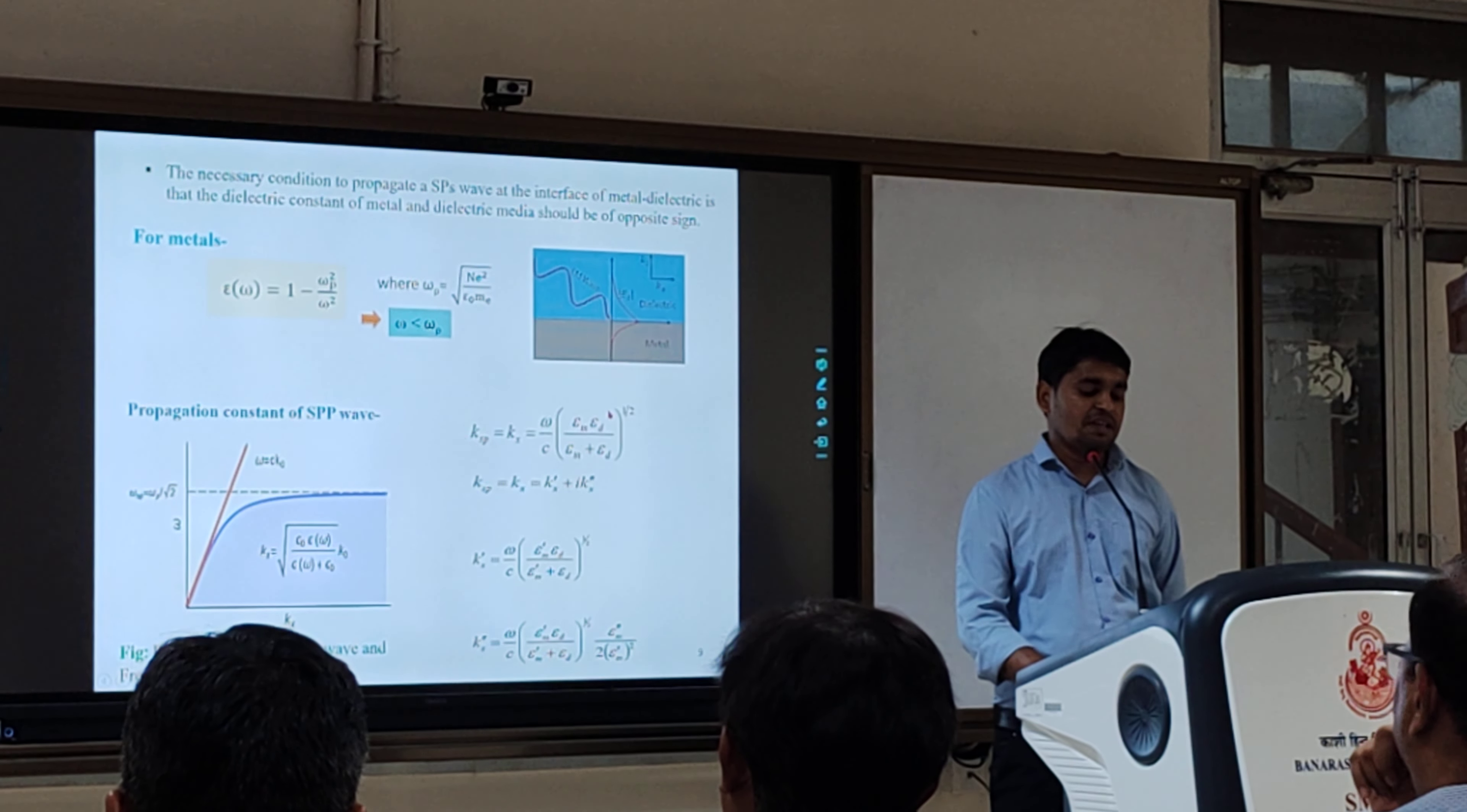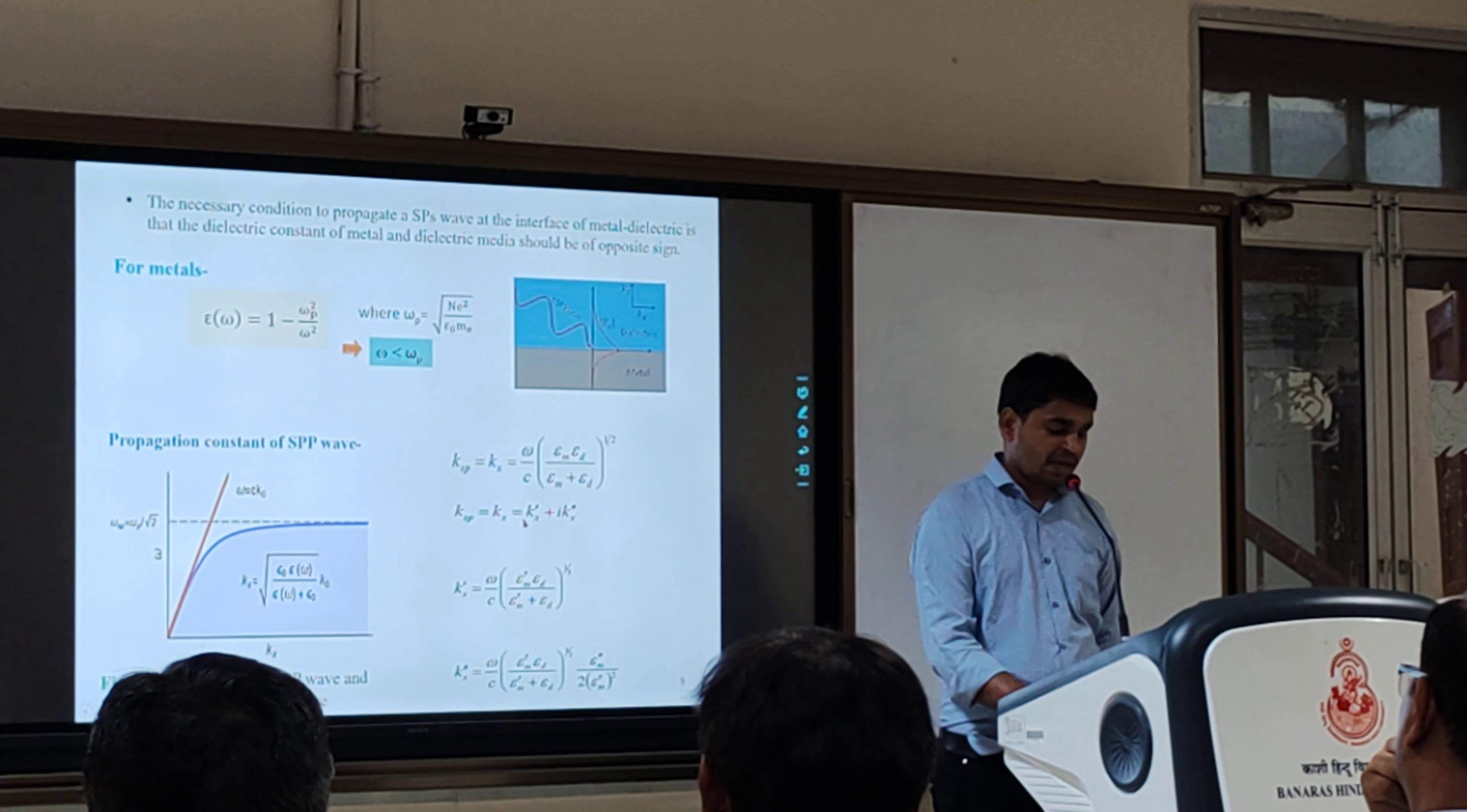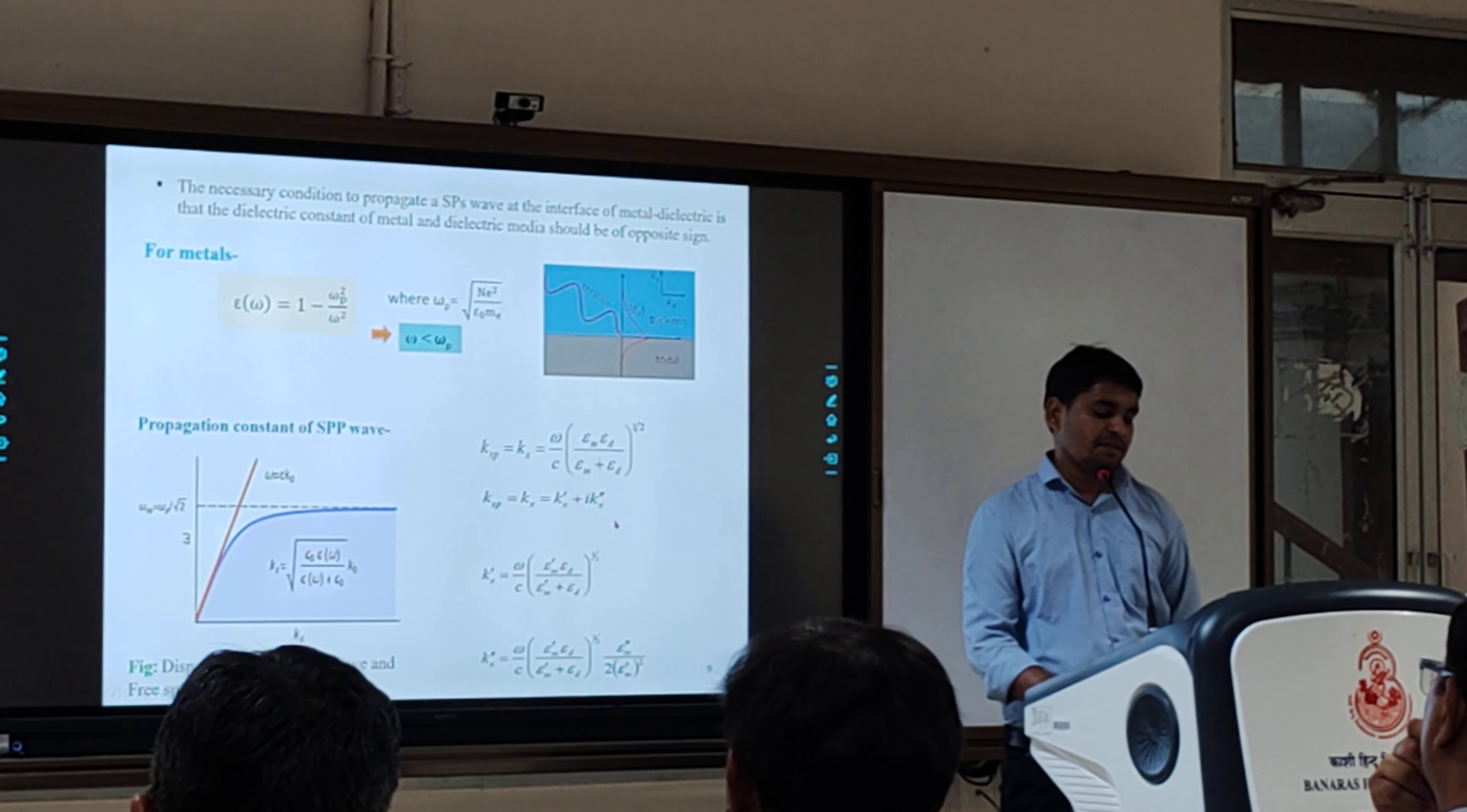Since the dielectric constant of metal is complex in nature, the wave vector will also be complex. The real part is responsible for wave propagation and the imaginary part is responsible for the decay of the wave.